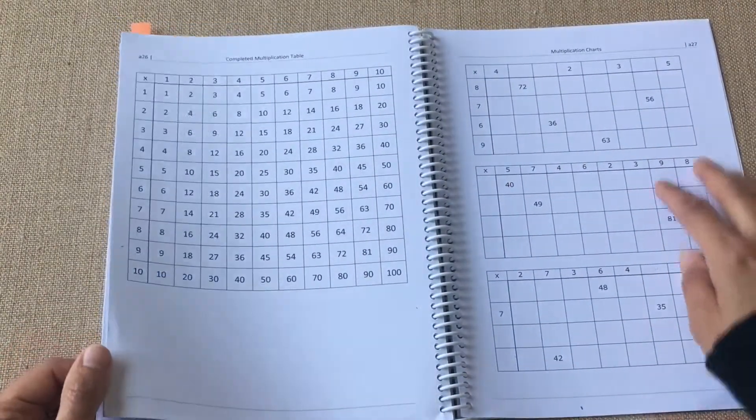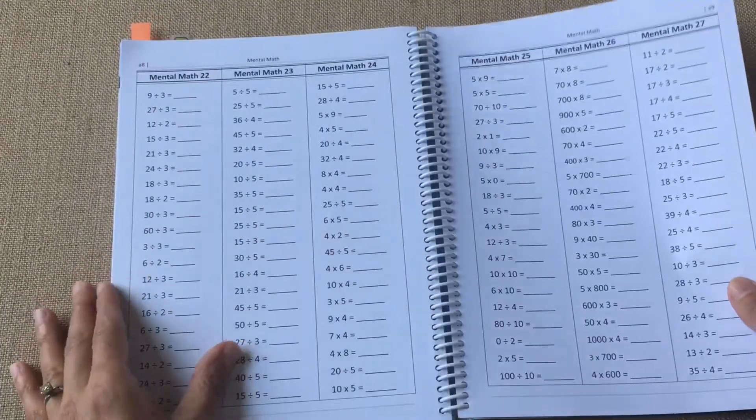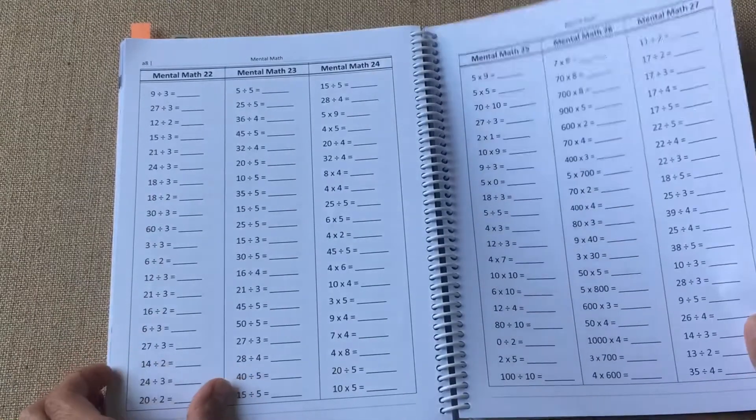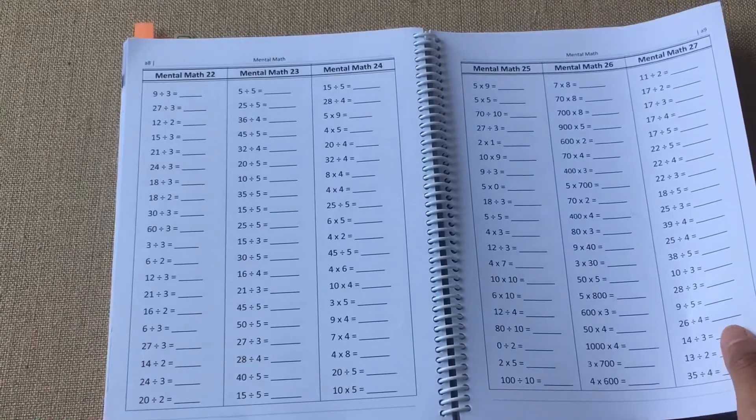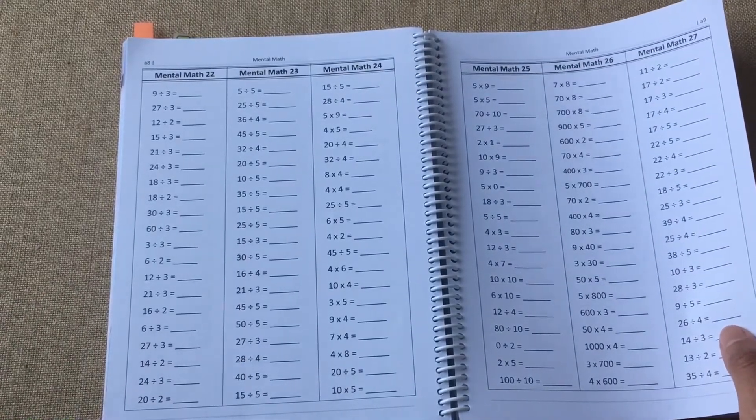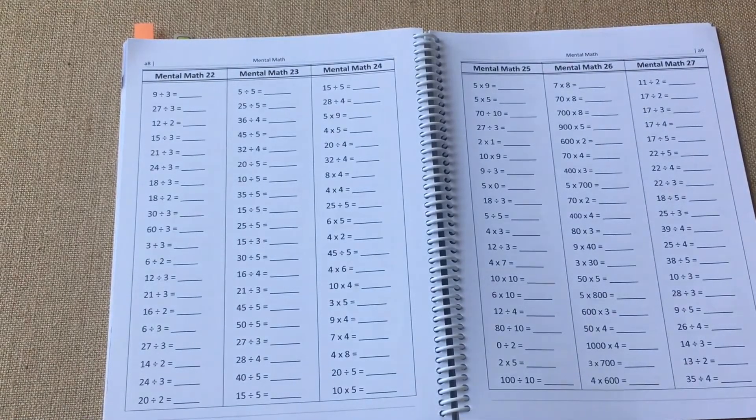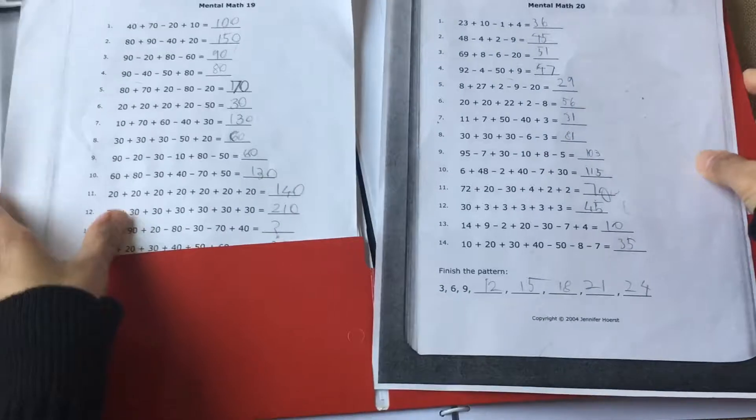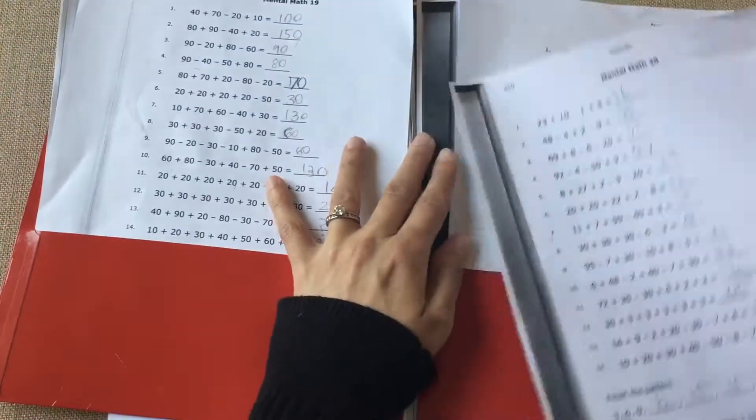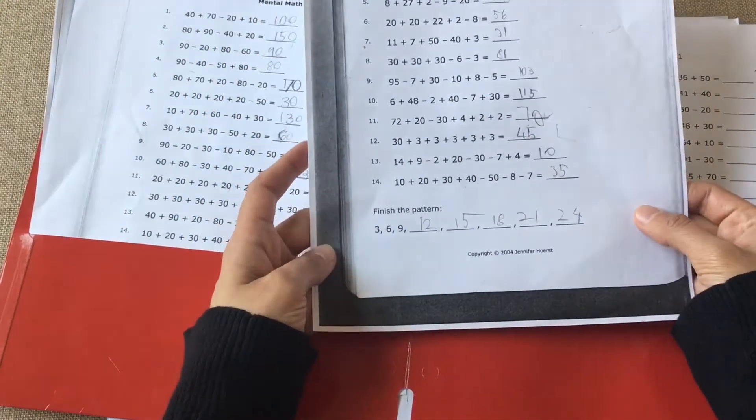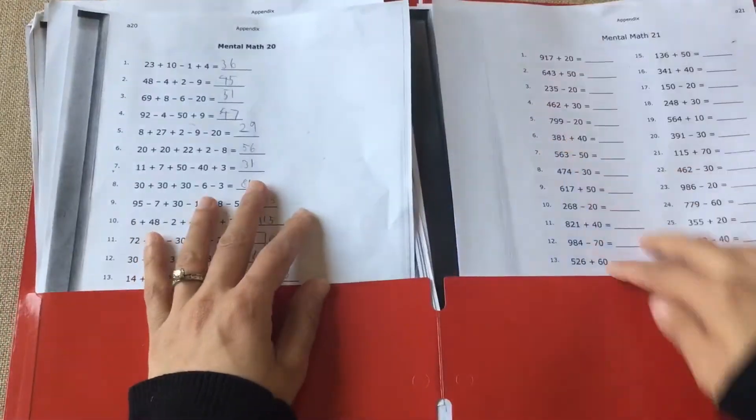This is the number chart you can photocopy and use. These are multiplication charts for extra practice. Sometimes what I do is print this off and keep it in a separate binder like this. As we work through the sheets, we just move them from here to here. I would assign my son a couple of mental math pages and he just works through it.